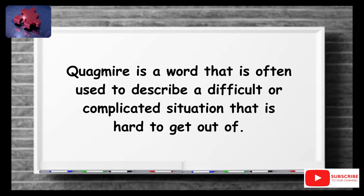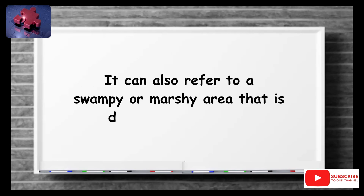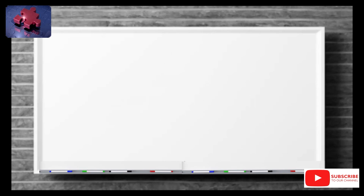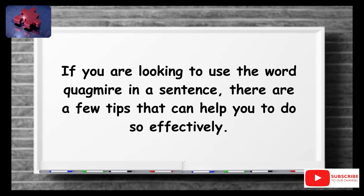Quagmire is a word often used to describe a difficult or complicated situation that is hard to get out of. It can also refer to a swampy or marshy area that is difficult to navigate. If you are looking to use the word quagmire in a sentence, there are a few tips that can help you to do so effectively.